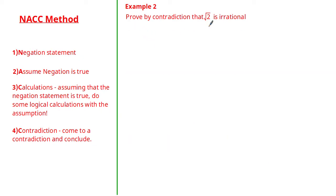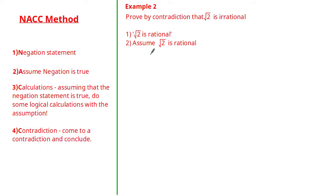Let's look at the next example: prove by contradiction that the square root of 2 is irrational. The first thing we need to do is form the negation statement. Because the original statement uses the keyword 'is,' the natural negation is that the square root of 2 is not irrational — another way to say that is the square root of 2 is rational. We'll use that as our negation.